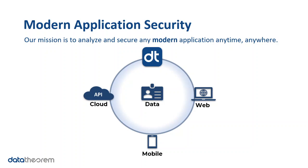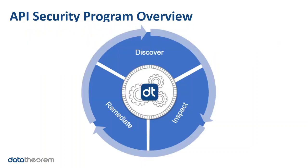Today I will be talking about API Secure, which continuously analyzes and secures your application APIs to avoid data breaches. There are three overall steps taken by the API product: discovery, inspection, and remediation.